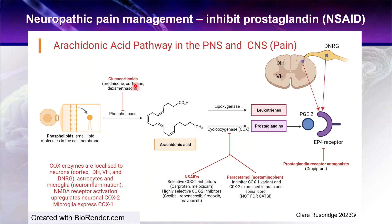I do not advocate using glucocorticoids in many neurological diseases. I'm certainly not a fan of blanket use of prednisolone just because it's a neurological problem. I will specifically use them in diseases of the brain involving significant inflammation, such as meningoencephalomyelitis of unknown origin — though always with a glucocorticoid-sparing agent. But in neuropathic pain, I will use them in two specific circumstances.